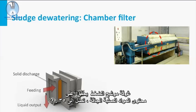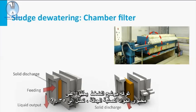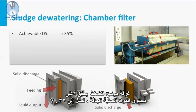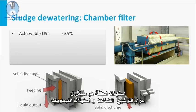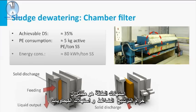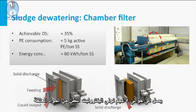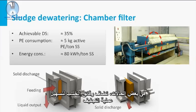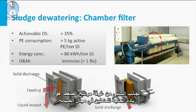The chamber filter press achieves the highest dry solids content, reaching up to 35%. The energy consumption is similar to the filter belt press, and the chemical consumption reaches about 5 kilograms PE per ton SS. In some cases, wood chips are added to facilitate the drying process. The downside of the chamber filter press is the high demand for maintenance personnel.